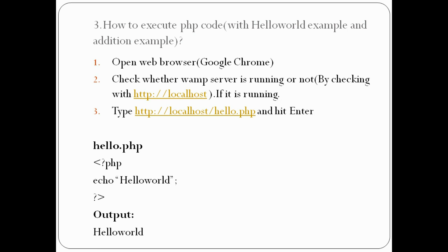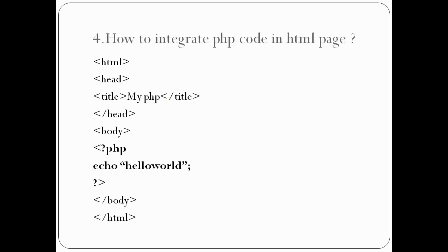Third, how to execute a PHP code. Open the browser and check whether WAMP server is running by typing HTTP://localhost. If it is running, type HTTP://localhost/hello.php and hit Enter. After hitting Enter, you will get the output 'Hello World'. How to integrate PHP code in an HTML page.